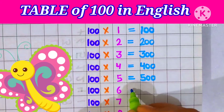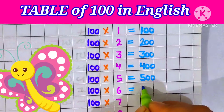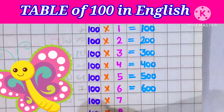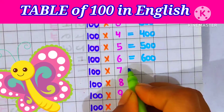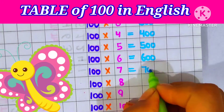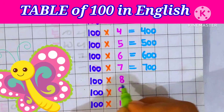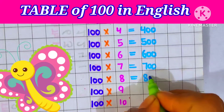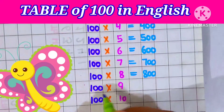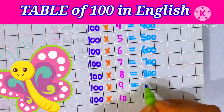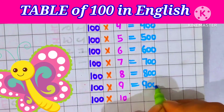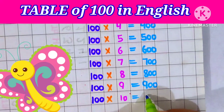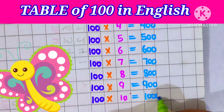Hundred sixes are six hundred. Hundred sevens are seven hundred. Hundred eights are eight hundred. Hundred nines are nine hundred. Hundred tens are thousand.